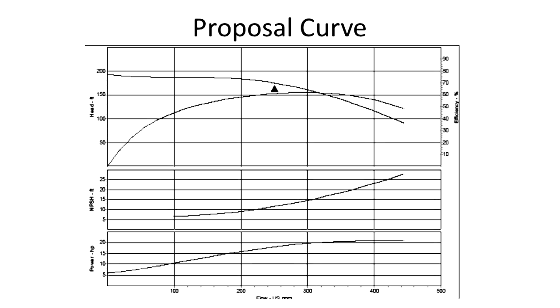The second type of curve is a proposal curve, generated by a manufacturer's software. This is similar, and it shows the same information, just a different format.